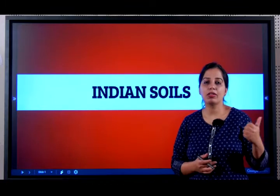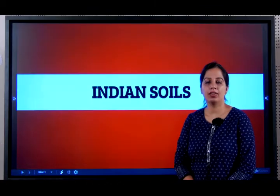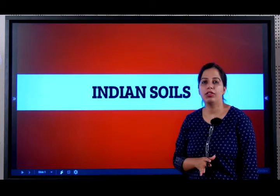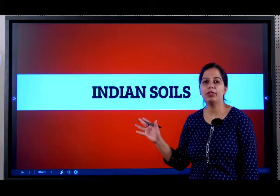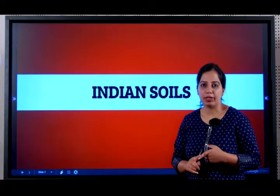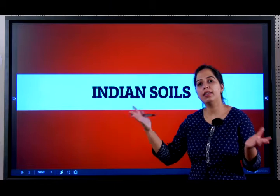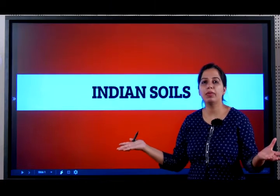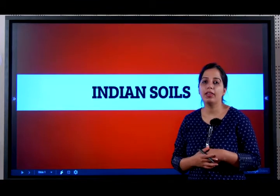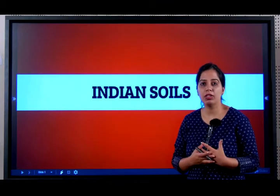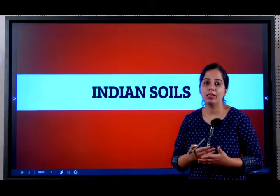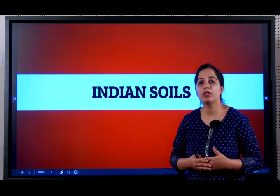So first we will be learning about soil formation. This is one of the easiest chapters in geography. The topics we would be learning in this chapter are: meaning and importance of soil, then various types of soils. When we talk about types of soils, we should also know their characteristic features. Lastly, we will learn about the problem of soil erosion and how it can be resolved.